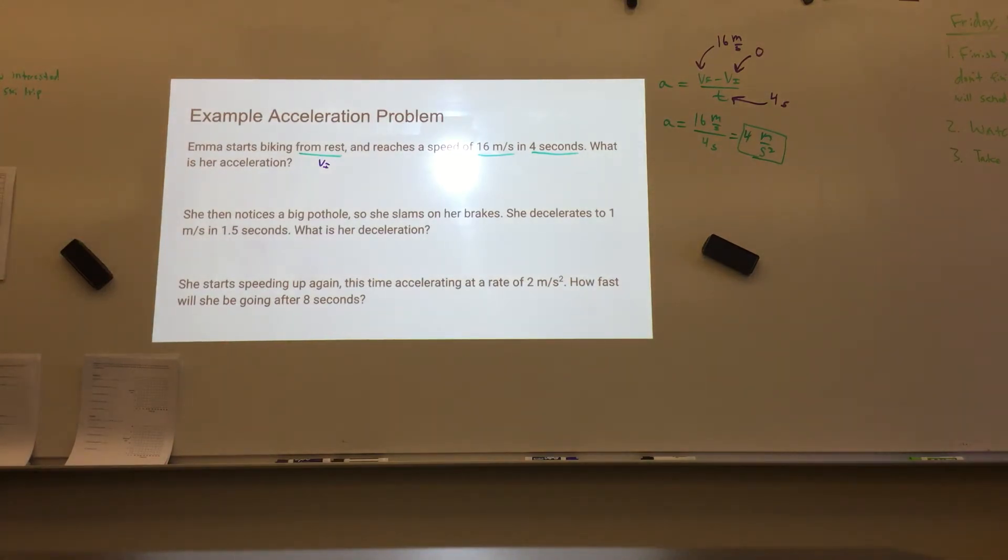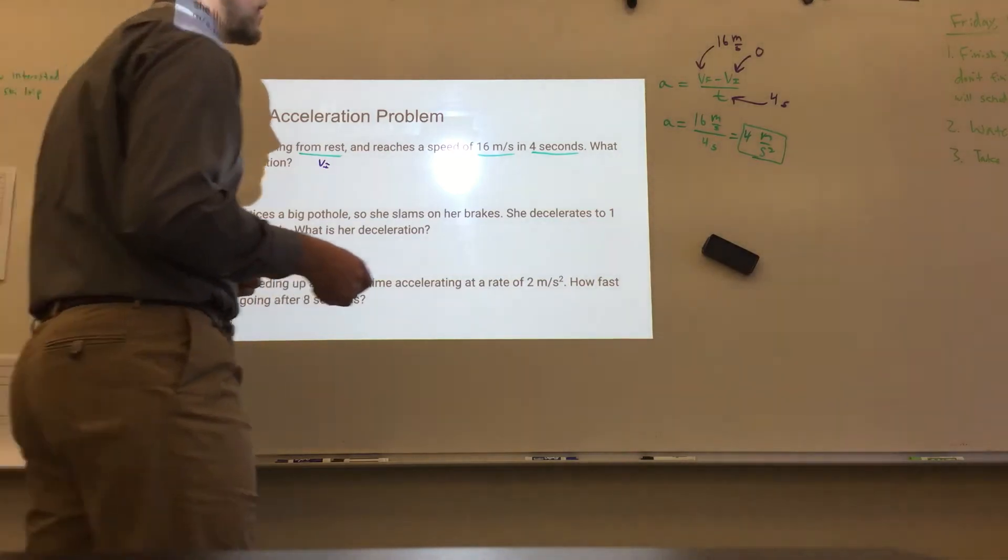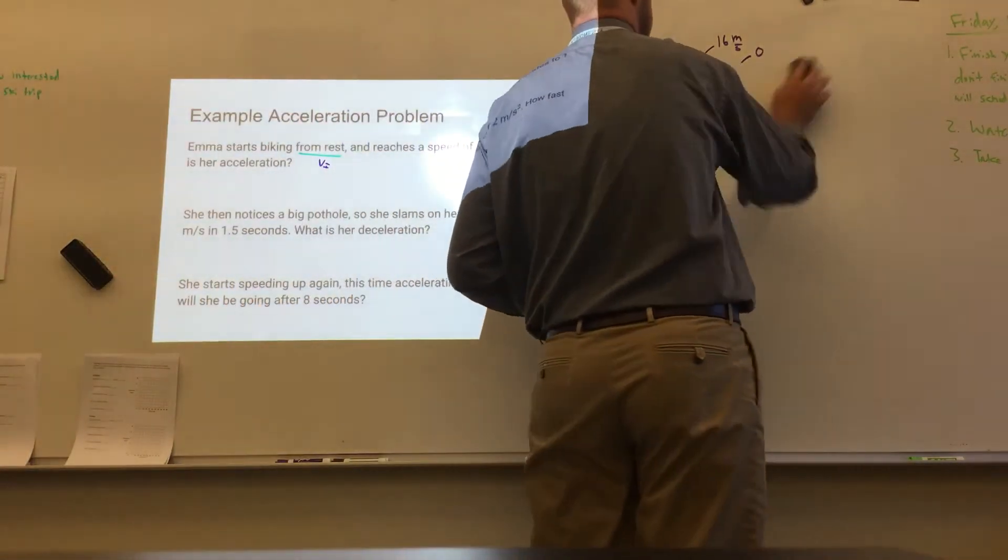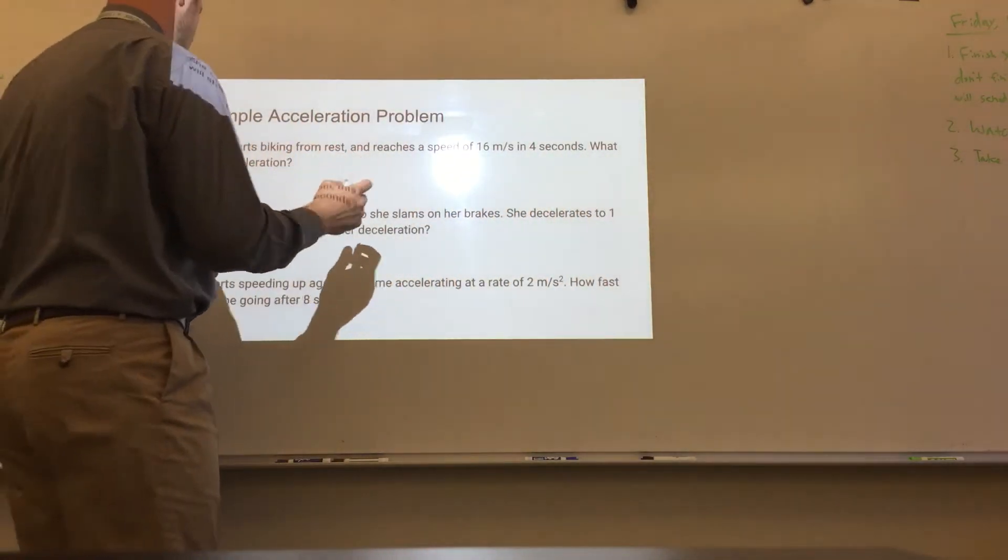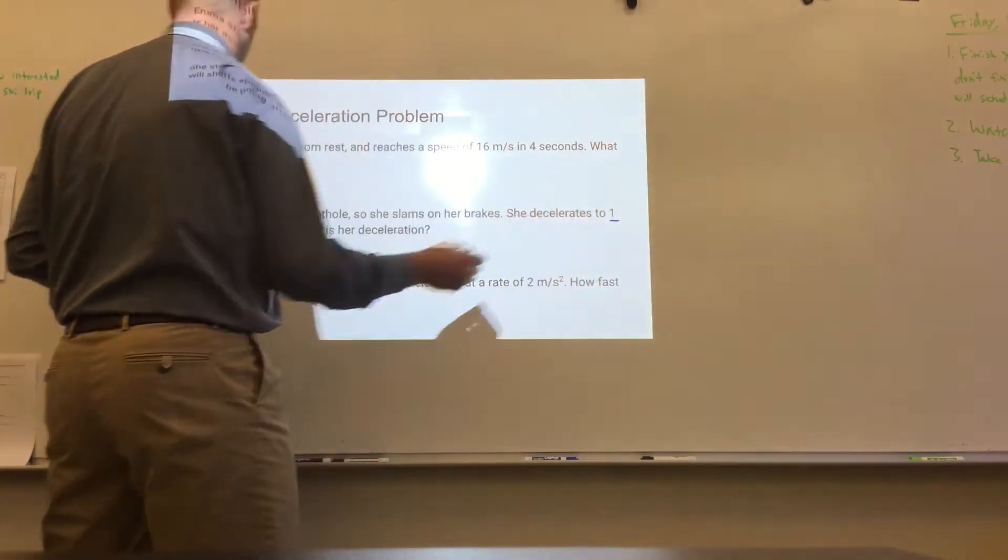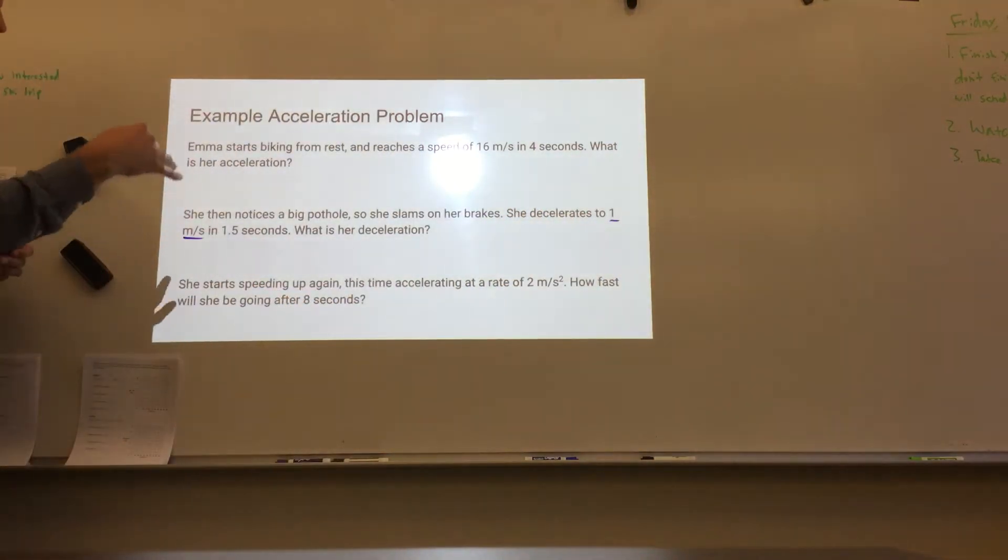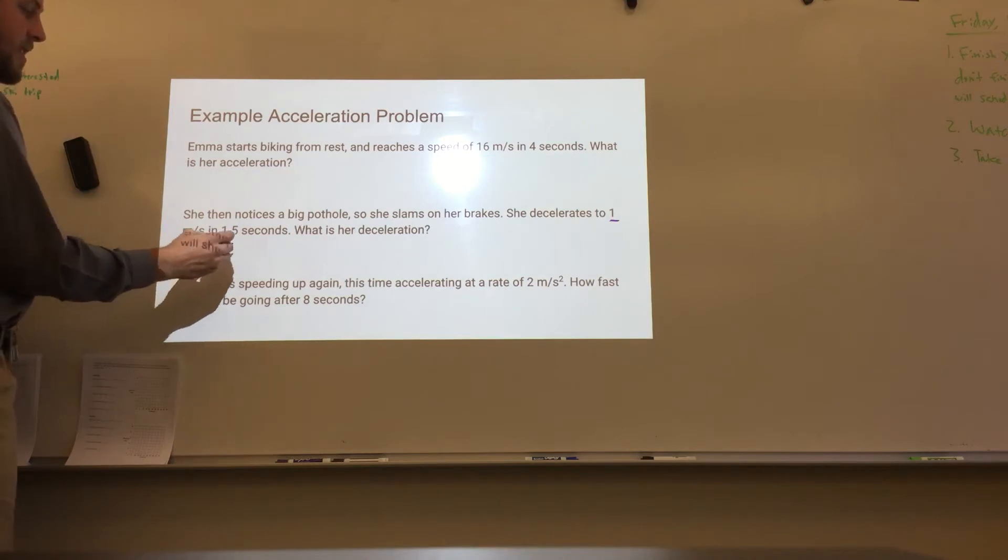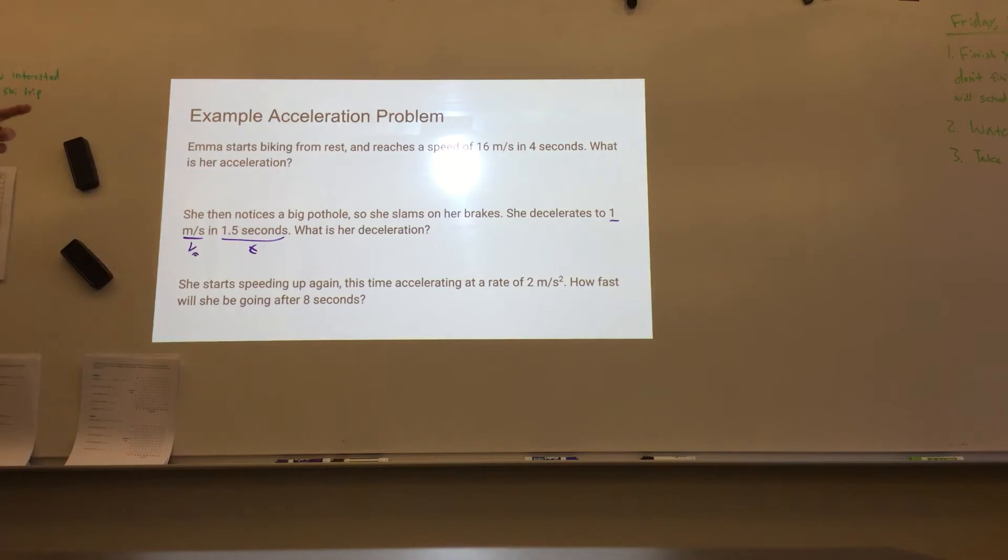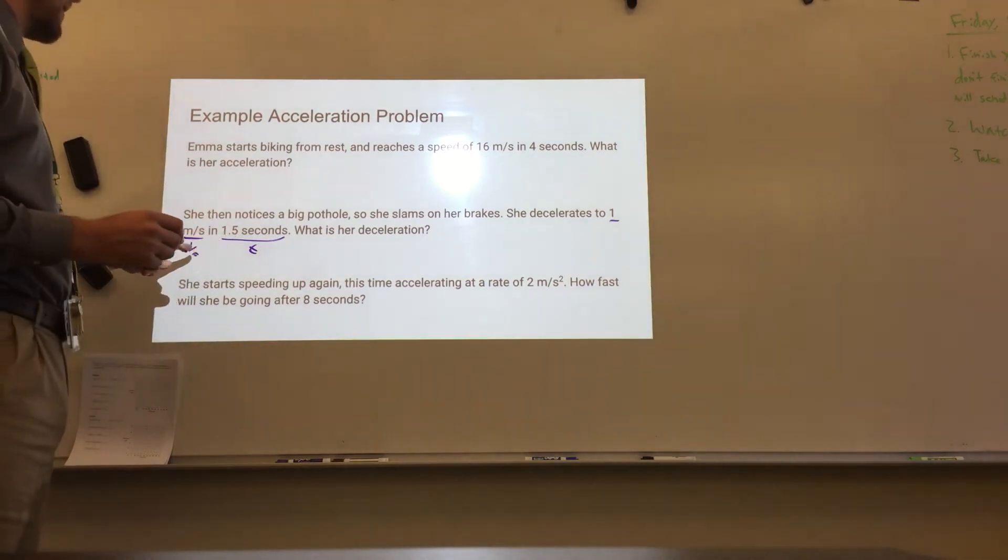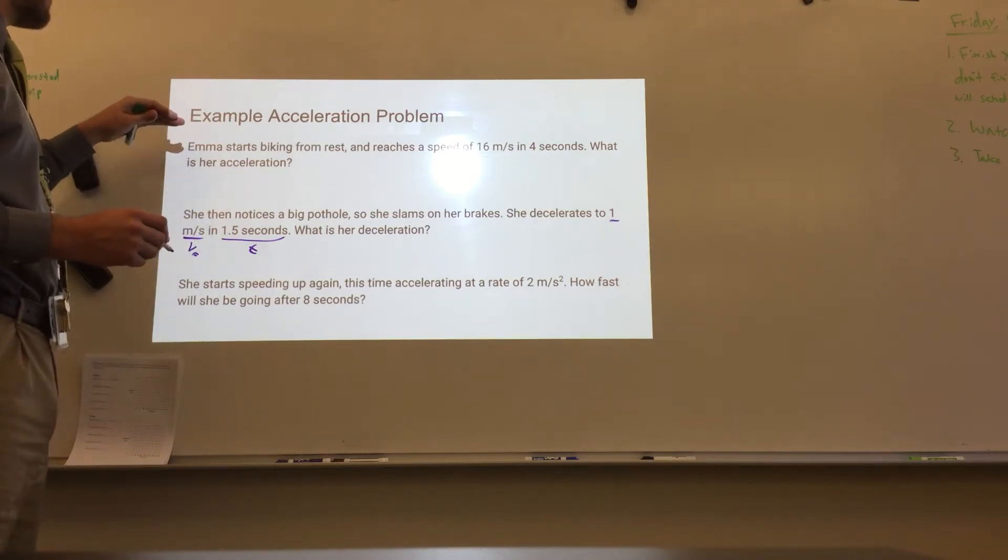She then notices a big pothole, so she slams on her brakes, she decelerates to 1 meter per second in 1.5 seconds. What is her deceleration? Let me erase this. So we know in this, 1 meter per second, that's what she came to at the end of the problem, so that would be her final velocity. 1.5 seconds, that would be her time. And I'm asking you to solve for her deceleration. The other thing you need to realize is that you're using the information from this problem.